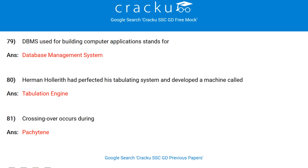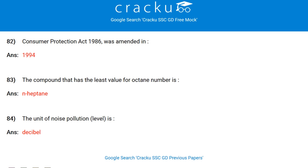The total energy of an electron inside an atom is less than zero. DBMS stands for Database Management System. Herman Hollerith had perfected his tabulating system and developed a machine called the Tabulating Engine. Crossing over occurs during pachytene. Consumer Protection Act 1986 was amended in 1994. The compound that has the least value for octane number is n-heptane.